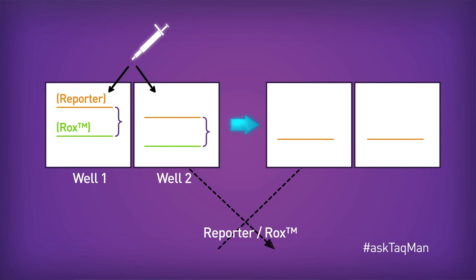By the way, the value that results is called RN, which stands for normalized reporter.